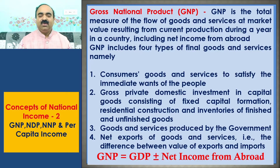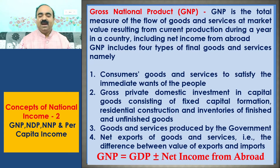GNP includes four types of final goods and services: 1. Consumers goods and services to satisfy the immediate wants of the people. 2. Gross private domestic investment in capital goods consisting of fixed capital formation, residential construction and inventories of finished and unfinished goods. 3. Goods and services produced by the government. 4. Net exports of goods and services, that is, the difference between value of exports and imports.